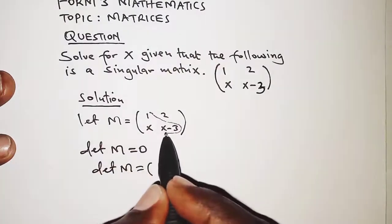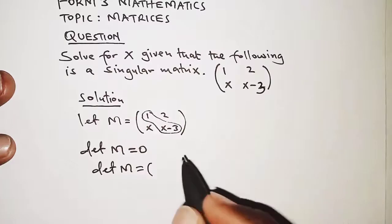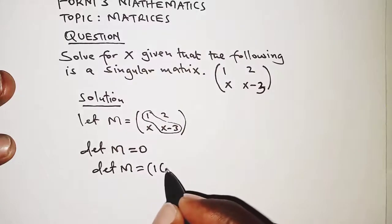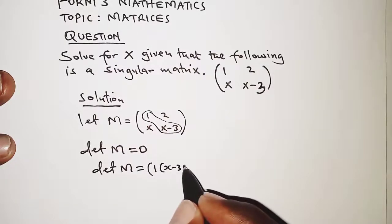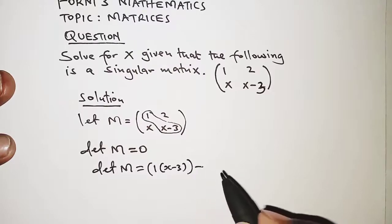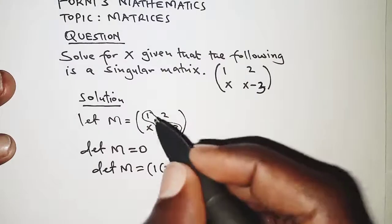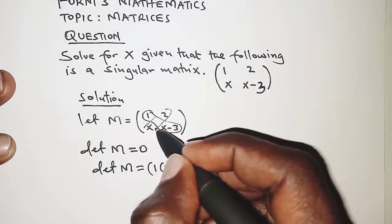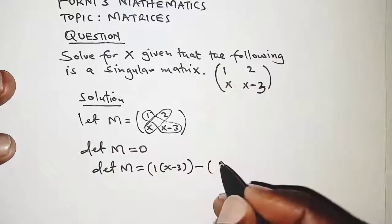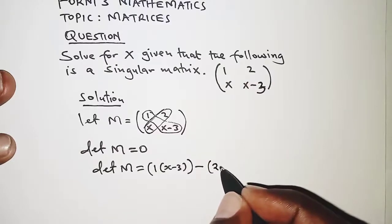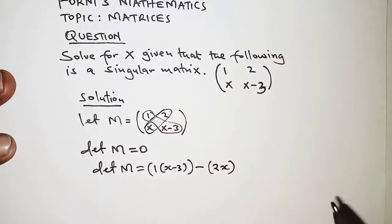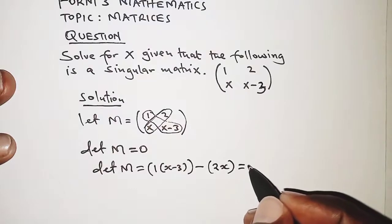Minus the product of the elements of the second diagonal, and that is X and 2. So you have 2 by X, which is 2X, and then the result there we have to equal to 0.